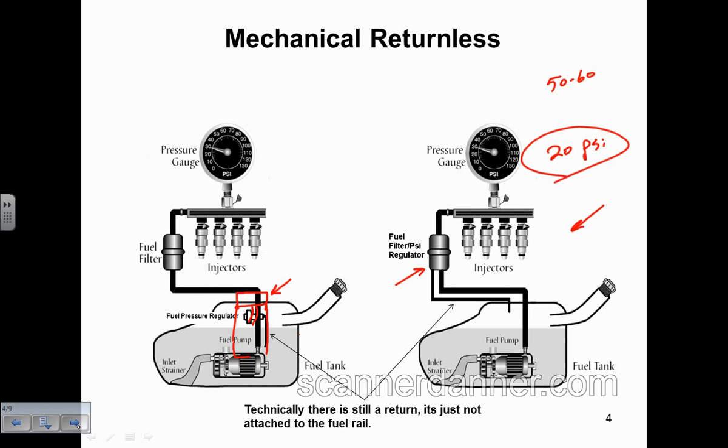So of course I had lean conditions, low power, the whole deal. P0171, lean exhaust bank one. It was an under load lean condition. It was actually lean all the time. Again, 20 pounds of fuel pressure, very easy diagnosis. So the next thing I did, thinking again that my fuel pressure regulator was in the tank like this picture to the left, it's what I thought I was dealing with.